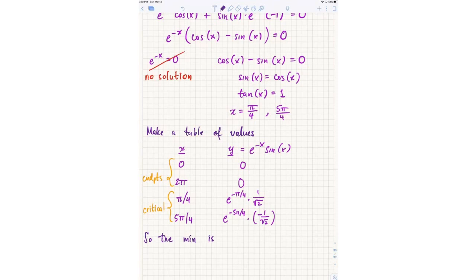The min is this negative number, and the max is this positive number, right? So the minimum is negative e to the negative 5 pi over 4 over root 2. And the max is e to the negative pi over 4 over root 2. And there we go. That's the end.